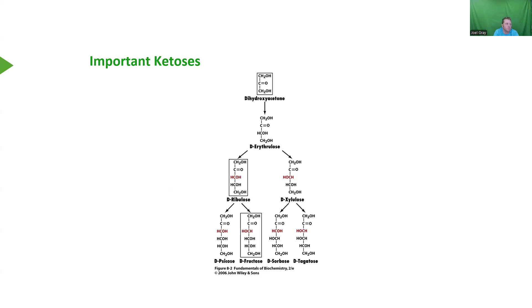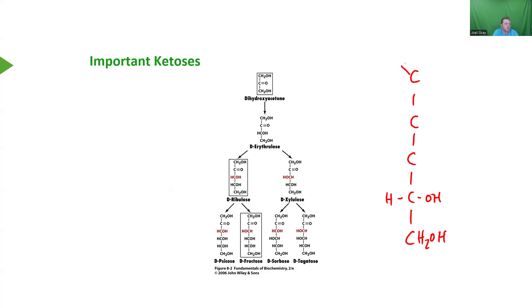The way I always remember glucose — my foundational sugar — is I look at it and say it's a hexose, so it has six carbons. If I'm drawing D-glucose, I'm going to put my hydroxyl on the right-hand side of carbon number five. It is also an aldose, so I have an aldehyde at the top. So this is a D-aldohexose.